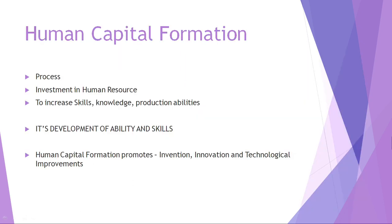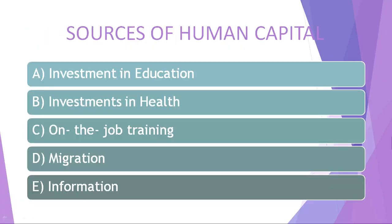Human capital formation is basically a process where we invest in human resources — the people — to increase their skill, knowledge, and production abilities. Human capital formation leads to innovation, invention, and the technological ability to adapt to new things. There are five sources of human capital: investment in education, investment in health, investment in on-the-job training, migration, and information.